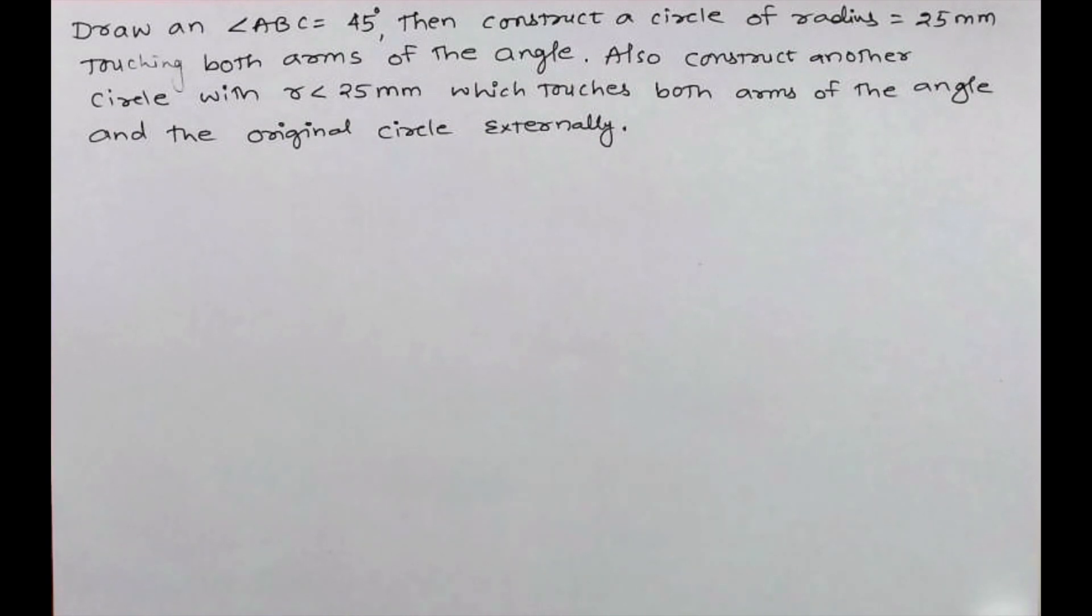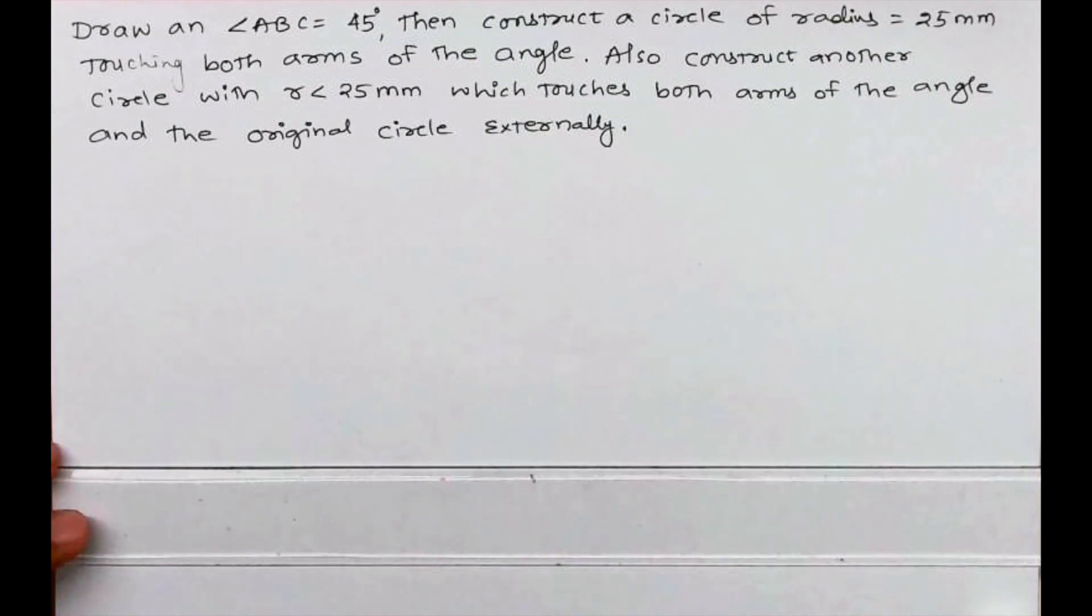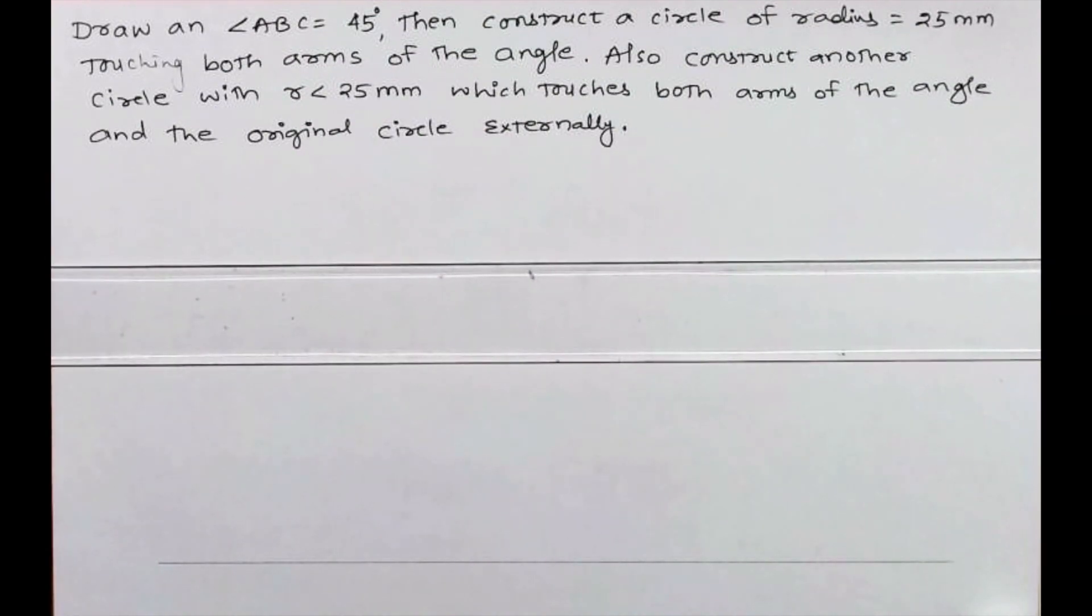We need to draw an angle ABC 45 degrees, then construct a circle of radius 25mm touching both arms of the angle. Also construct another circle with radius less than 25mm which is also touching both arms of the angle and the original circle externally.